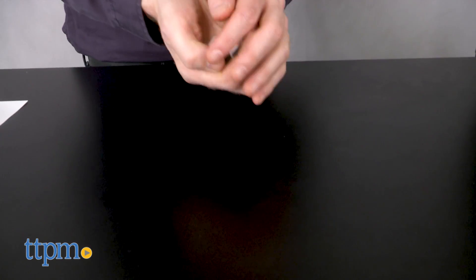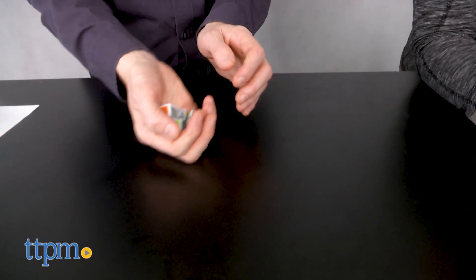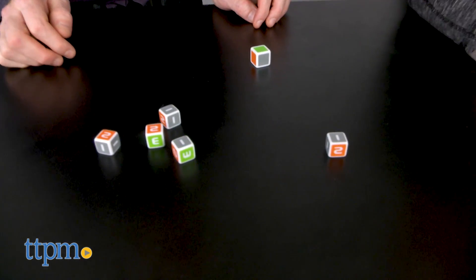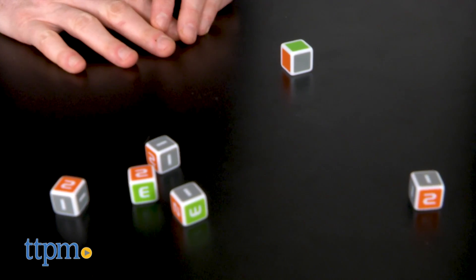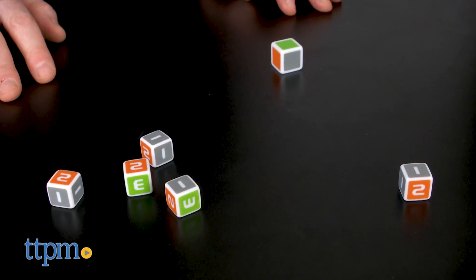The gameplay is simple. Roll all six dice. The five smaller dice are numbered one through three. To earn points, the smaller dice must match the color of the large die.